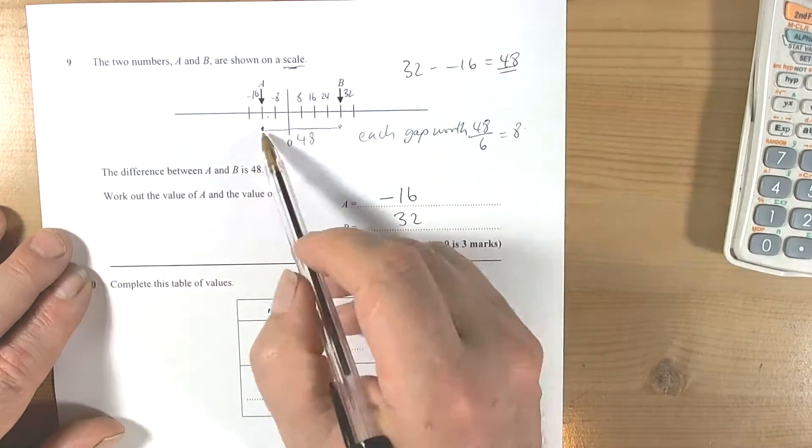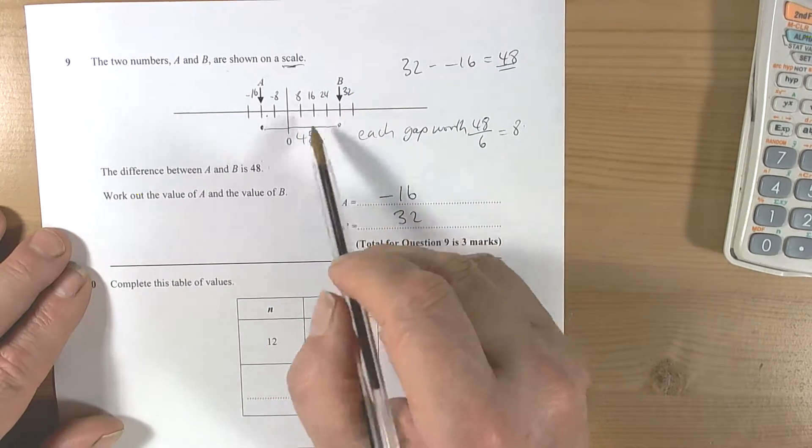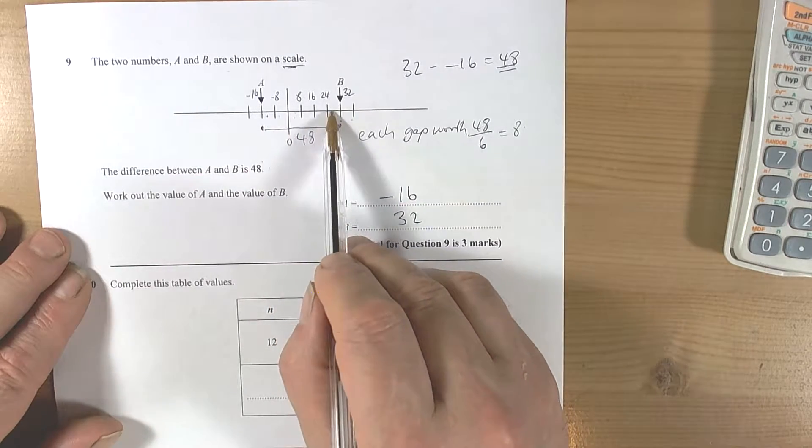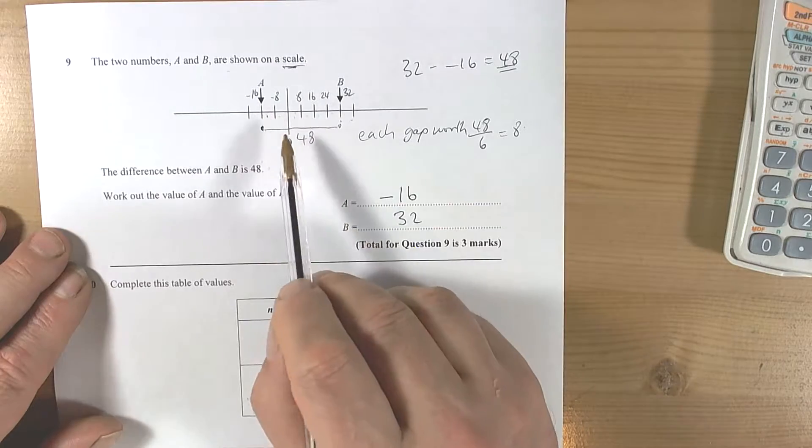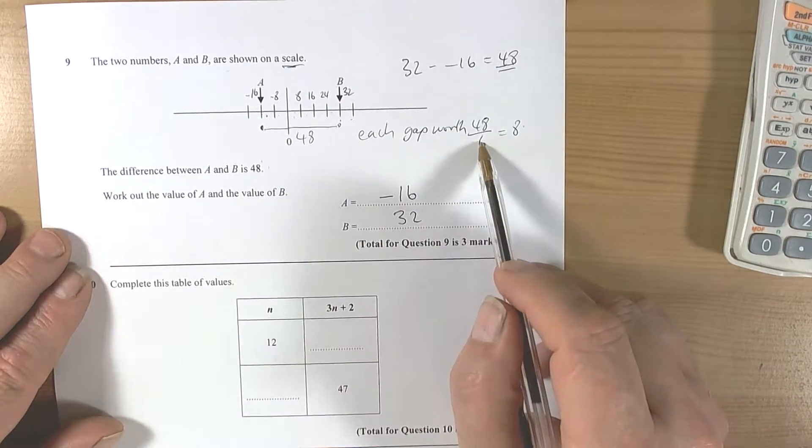Scale means that each gap must be worth the same, otherwise it wouldn't be in scale. And they told you the distance between those two, think about how many gaps you've got to work out each of those gaps being an equal distance. So if you've got a gap of 48 for six of those, each space must be worth 8.